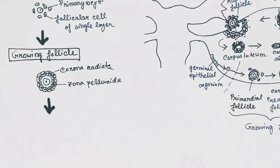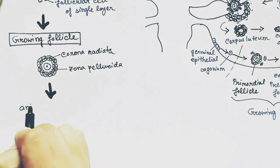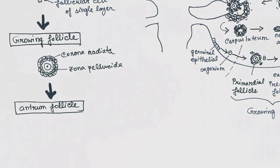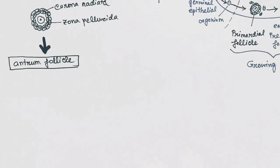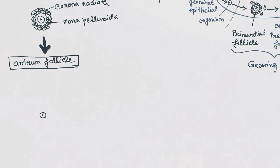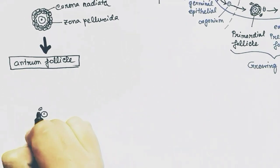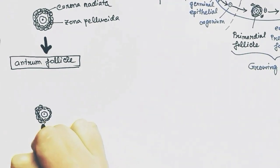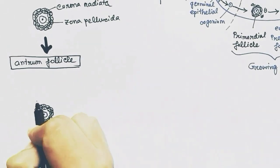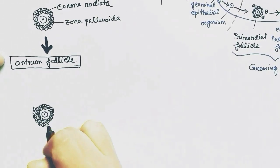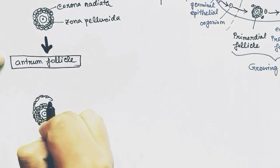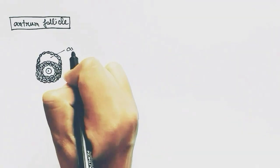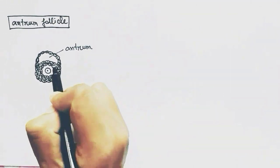Next, the antrum follicle. In the antrum follicle, the follicular cells surrounding the oocyte form a cavity in between the follicular cells. This antrum, or cavity, is filled with some fluid. With this antrum, the follicle is called the antrum follicle.